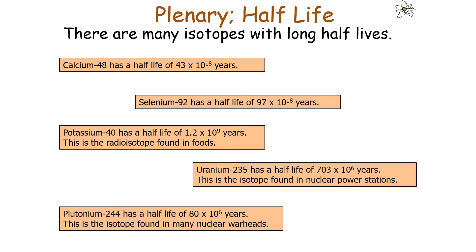You might use a different radioisotope for a biochemical tracer or for a nuclear reactor due to the radiation they give off and the half-life of that isotope. Famous examples of isotopes with very long half-lives include uranium-235, found in nuclear power stations, which has a half-life of 703 × 10⁶ years, and plutonium, also found in nuclear warheads, which has a half-life of 80 × 10⁶ years.